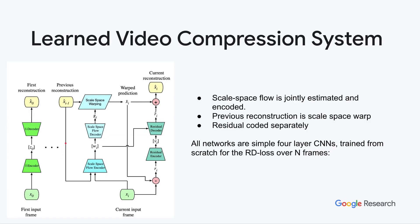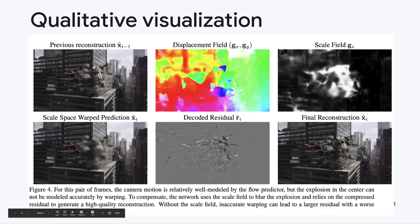We integrate the module into a learned video compression system, using it to predict the current input frame from a previous reconstruction. This allows us to warp the previous reconstruction while adaptively blurring it in regions where it's hard to predict by activating the scale field.